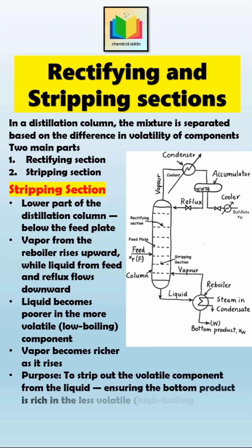Therefore, the main purpose of this section is to strip out the volatile component from the liquid, ensuring that the bottom product, that is the residue, is rich in the less volatile, that is, high boiling component. In short, the rectifying section enriches the vapor and purifies the distillate, while the stripping section removes volatile components and purifies the bottom product.